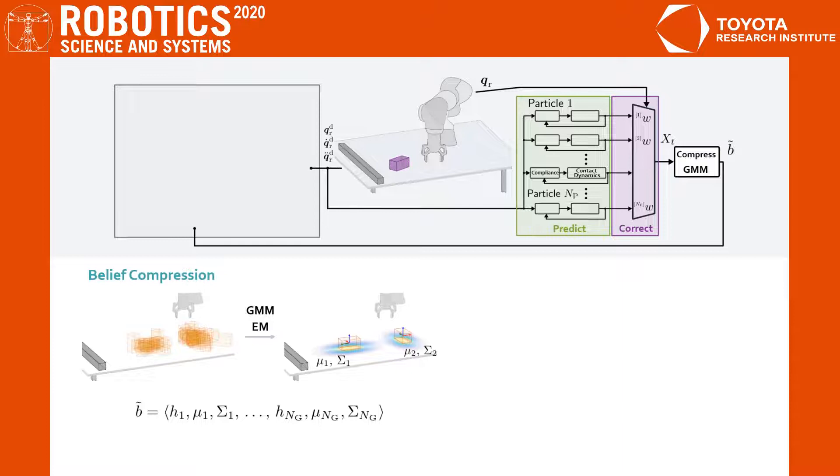We compress the particle belief using a Gaussian mixture. The resulting parametric distribution is independent of the number of particles and forms the basis for the now-introduced goal-directed motion controllers.